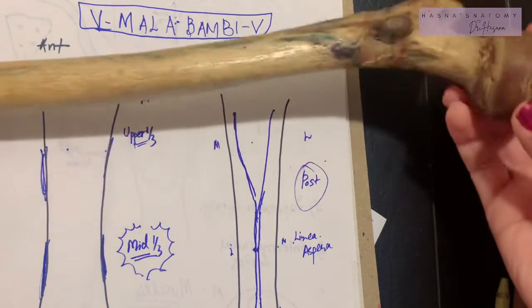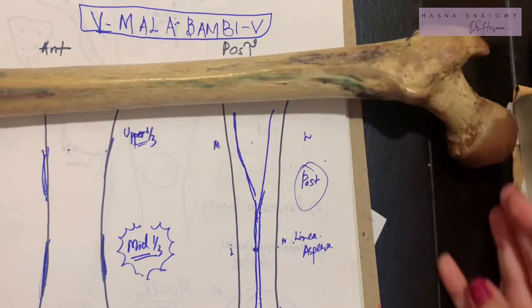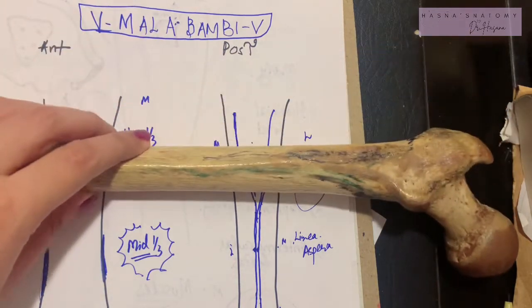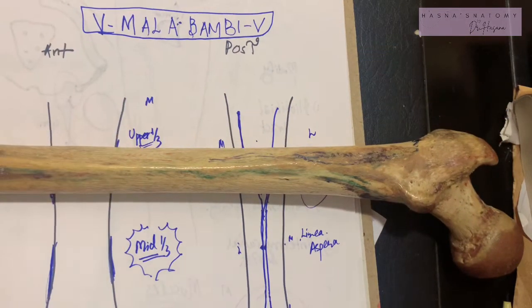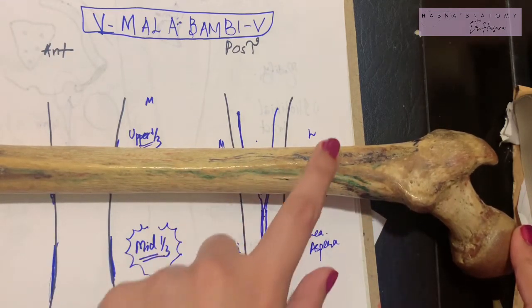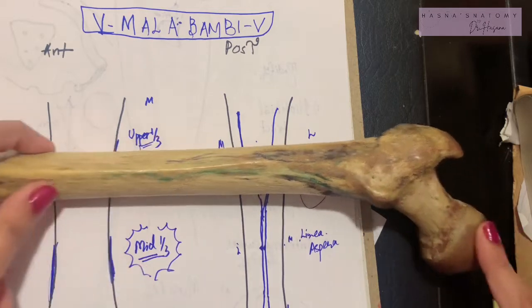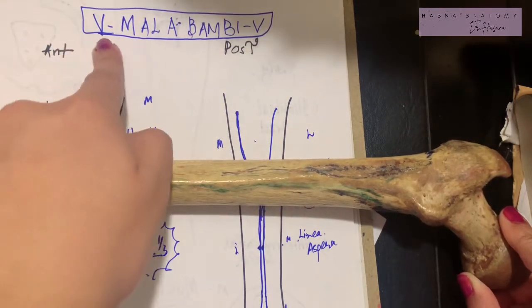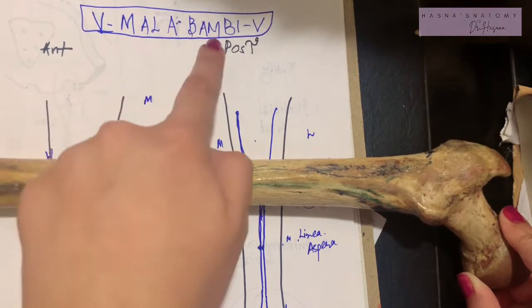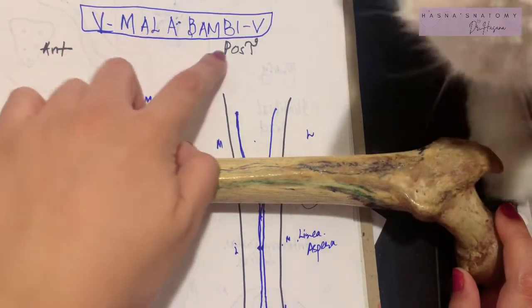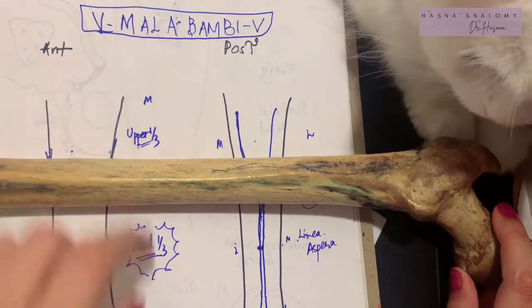Now let's talk about the tougher part, which is the attachments of the posterior surface of the shaft. However, I've made it into an easy mnemonic so you don't have any difficulty remembering. We all know this is the medial side and this is the lateral side because the head is a landmark. Starting from the medial to lateral side, the mnemonic goes: V mala Bambi V.